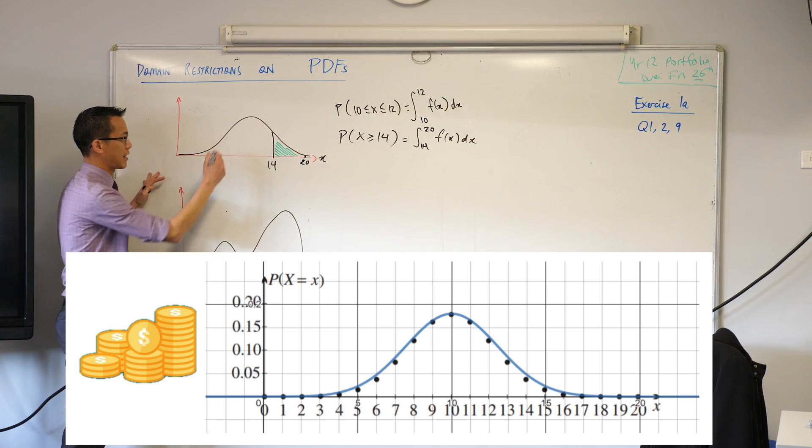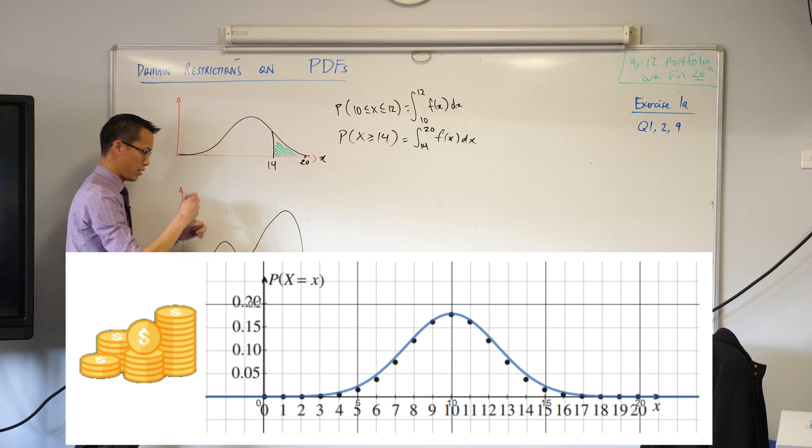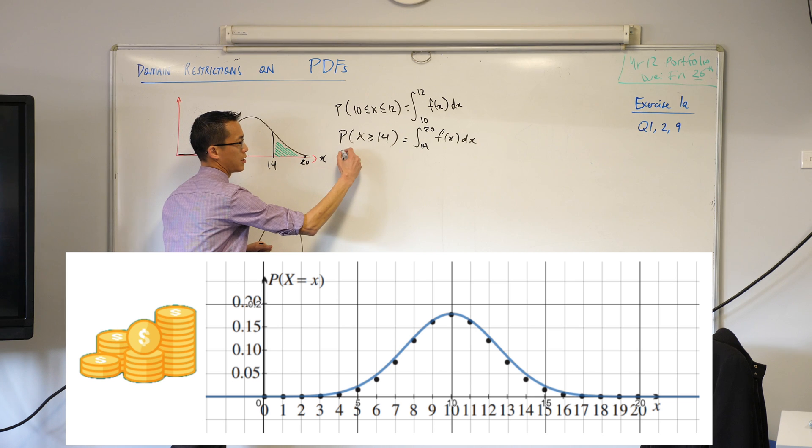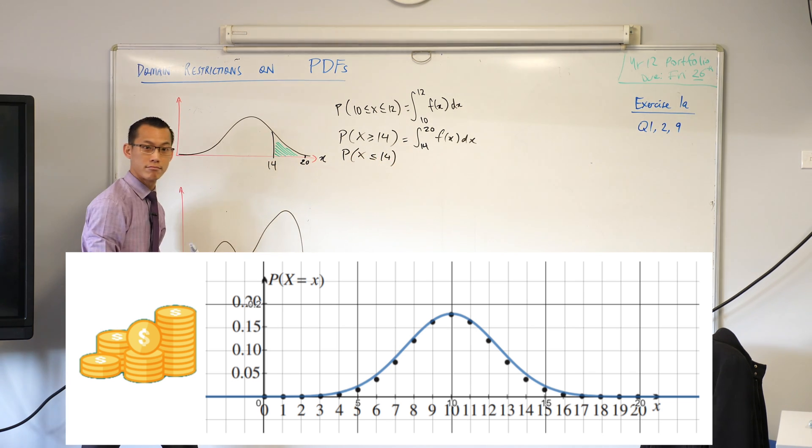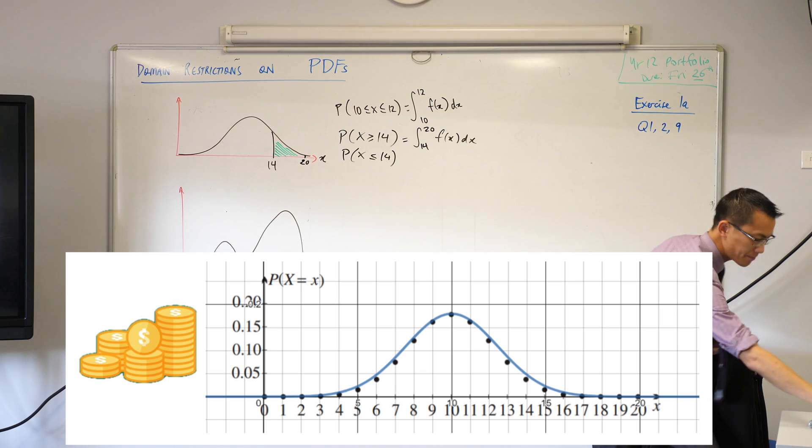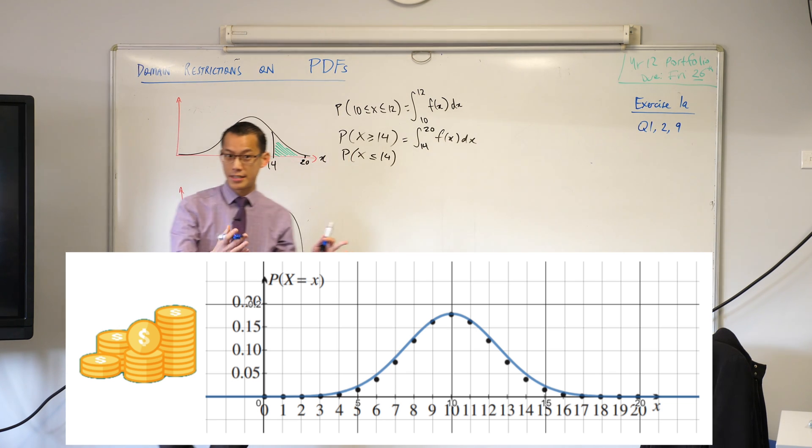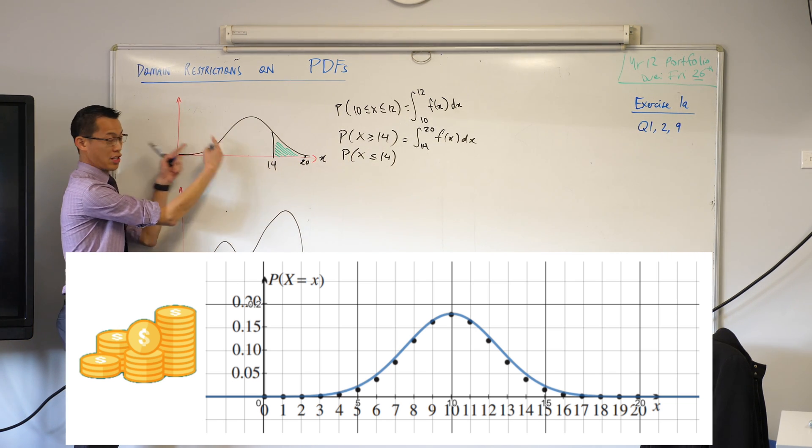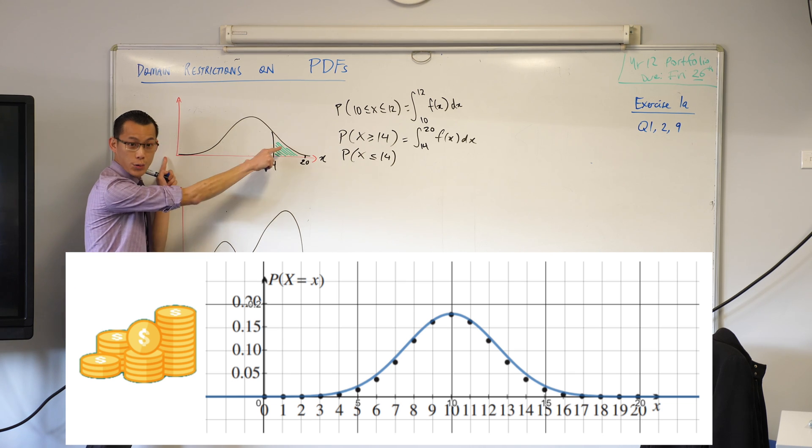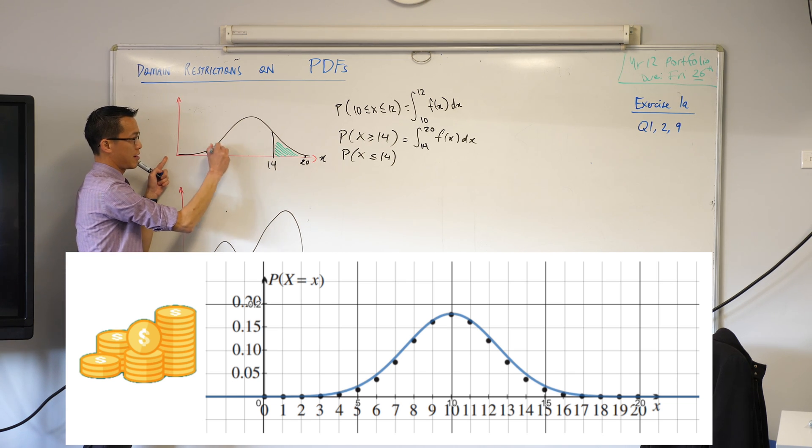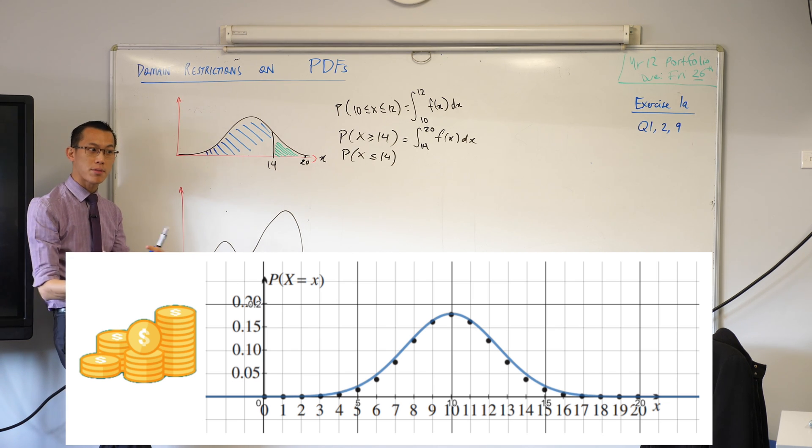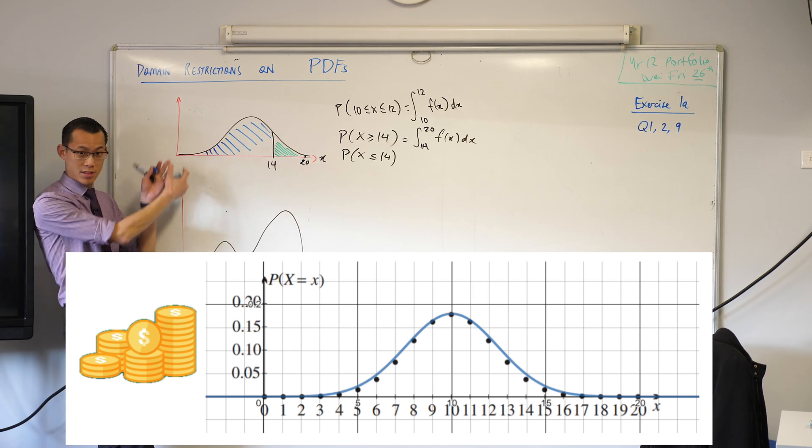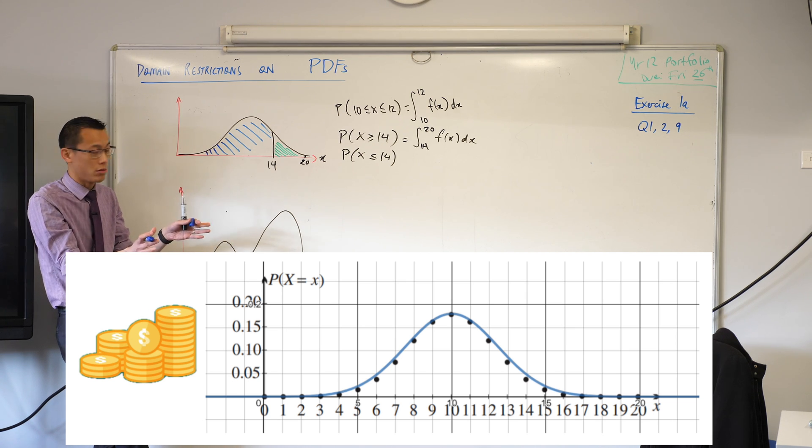If - pick out a point like, say, well actually let's just leave it at 14 - if I wanted the probability of x is less than or equal to 14, let me get a different color up. So, I'm now gonna say, I'm gonna start integrating from somewhere over here and then go to 14. So you're gonna end up with this area on this side. Again, there is a start point implied by the situation, even though it's not told to you. What's the domain restriction that's relevant here?